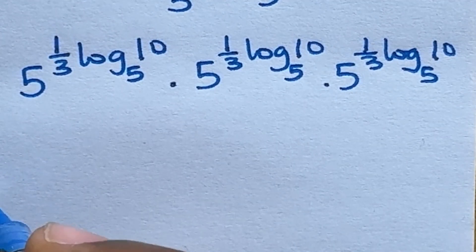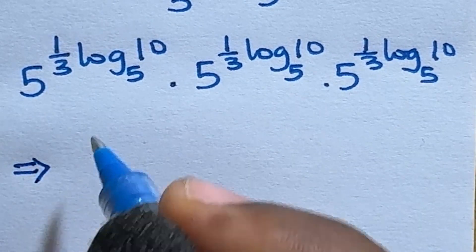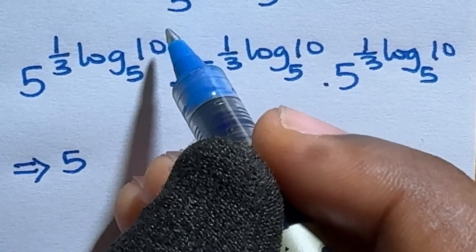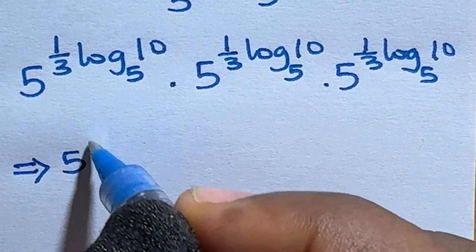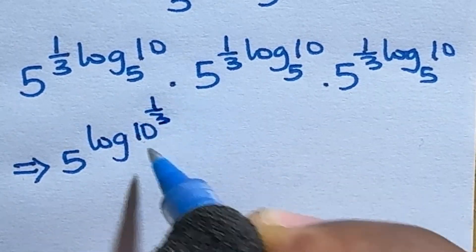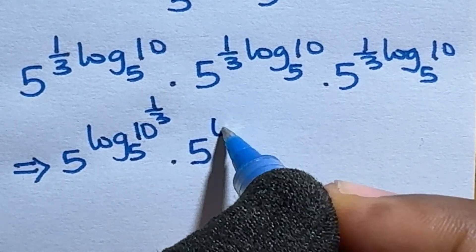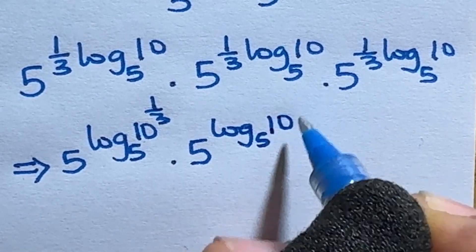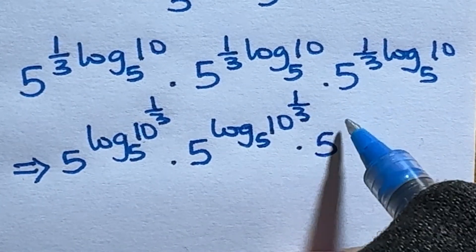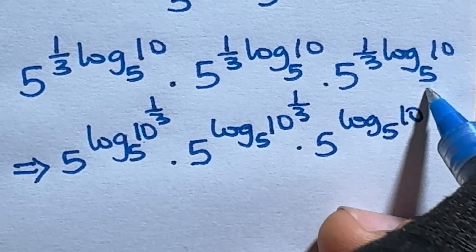So we can express this as 5 raised to power—transferring 1 over 3 to here. So we have log 10 raised to power 1 over 3 base 5. 5 raised to power 10 raised to power 1 over 3.